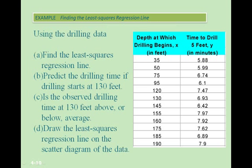Let's recall our example about drilling, which we used in the first section for this module. We want to: first, find the least squares regression line; then predict the drilling time if drilling starts at 130 feet; ask whether the observed drilling time at 130 feet is above or below average; and finally draw the least squares regression line on the scatter diagram.